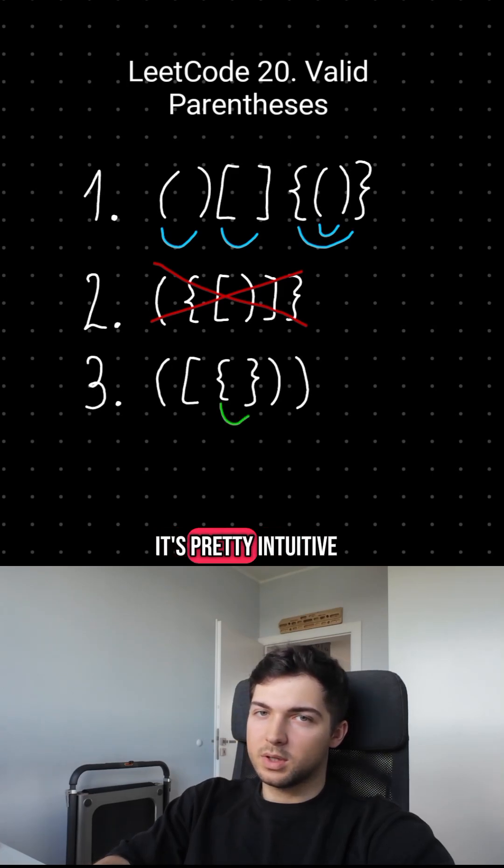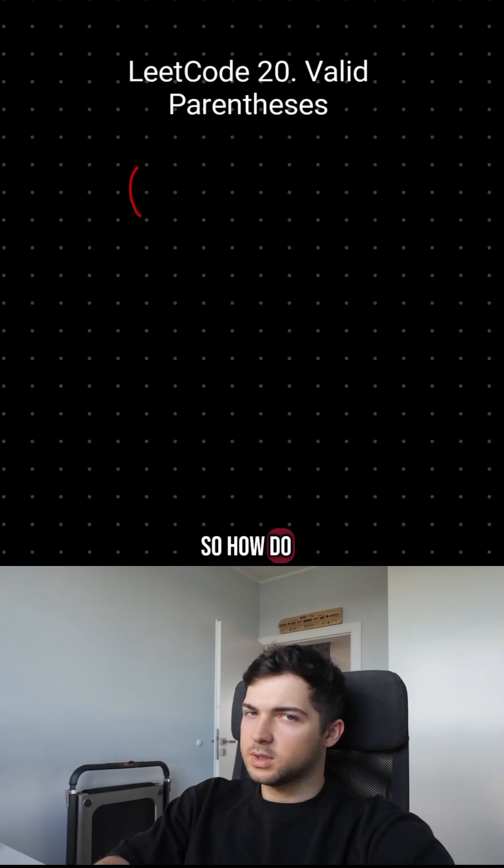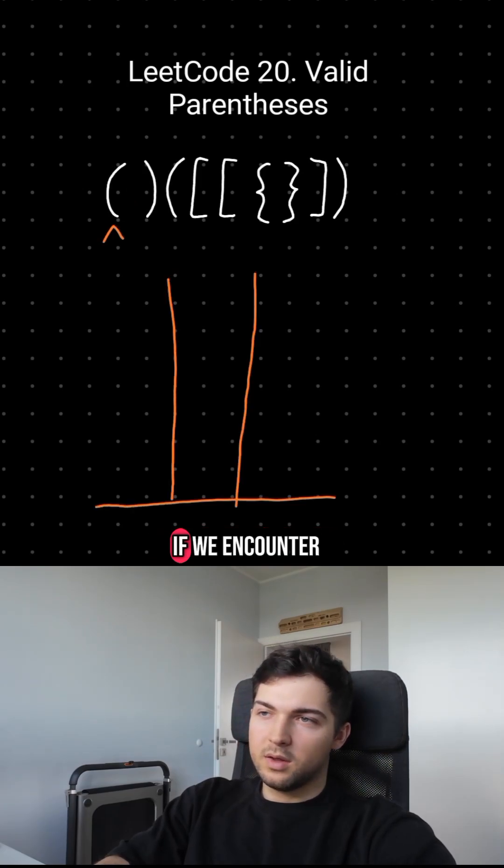Might sound like a lot, but it's pretty intuitive as you can see from examples. So, how do we solve it? Let's create an empty stack and iterate through the bracket string. If we encounter an opening bracket, we place it on top.